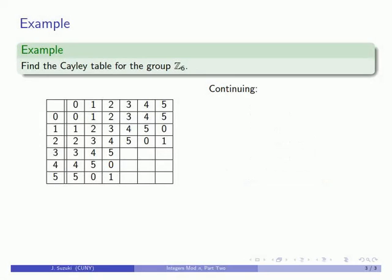And we continue with the addition. 3 plus 3 is 6, which is congruent to 0. 3 plus 4 is 7, which is congruent to 1. 3 plus 5 is 8, which is congruent to 2.